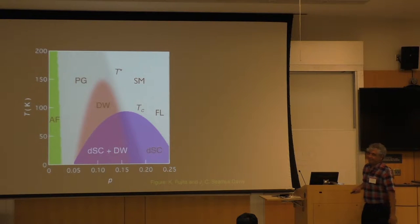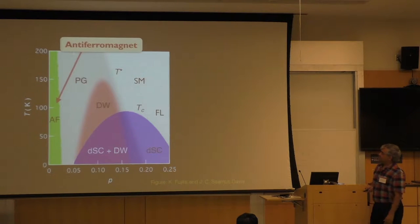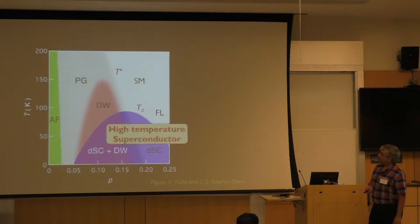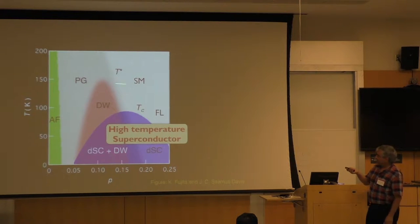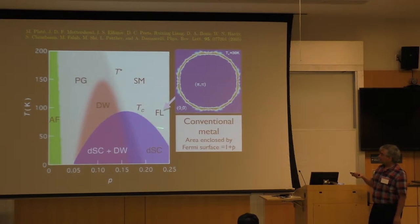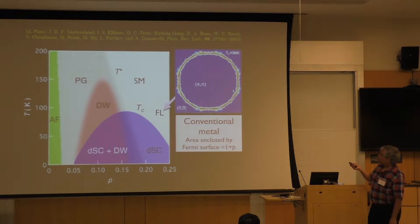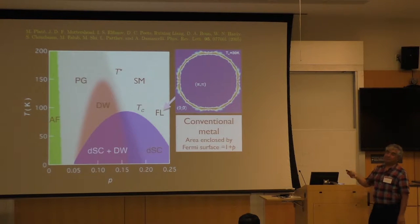There's the antiferromagnet which we know and love in the high-temperature superconductor. But let's ignore those two very important phases and talk about this region above TC. So what we know out here at high doping, from photoemission, you do exactly see area enclosed of 1 plus P, and you see various Fermi liquid behaviors.